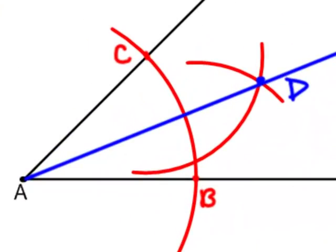And there you have it. Ray AD is the angle bisector of angle CAB.